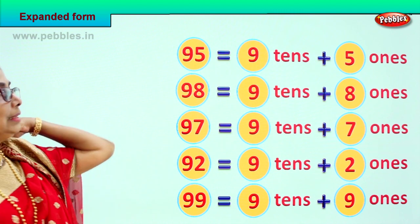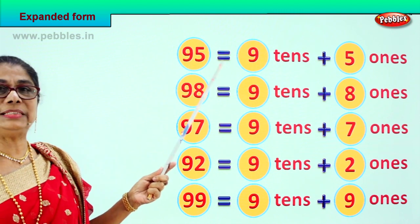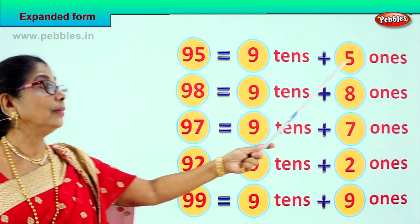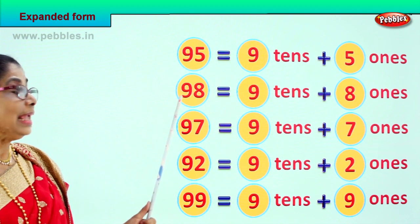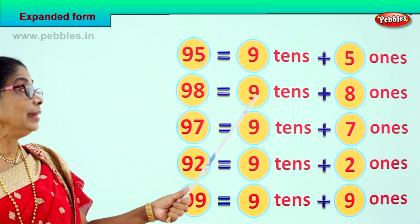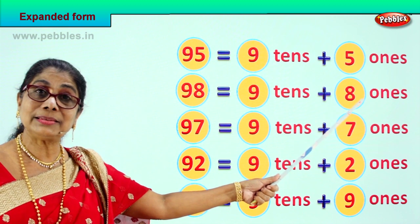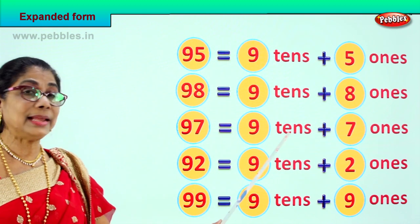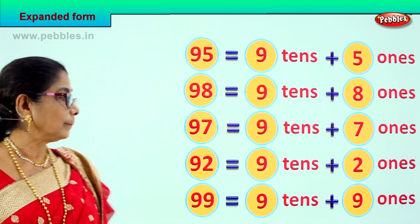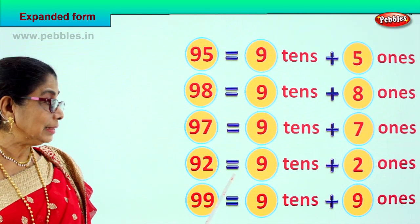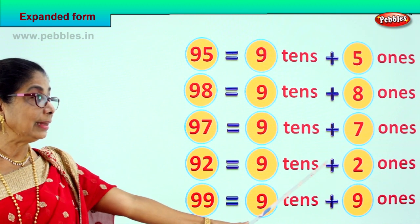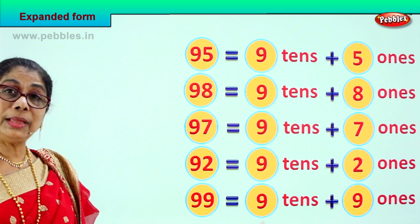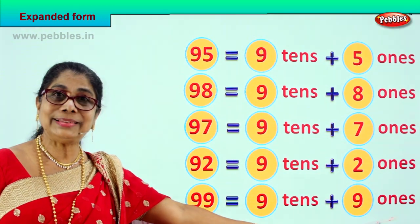Yes, let's read together. 95 is equal to 9 tens plus 5 ones. 98 is equal to 9 tens plus 8 ones. 97 is equal to 9 tens plus 7 ones. 92 is equal to 9 tens plus 2 ones. 99 is equal to 9 tens plus 9 ones.